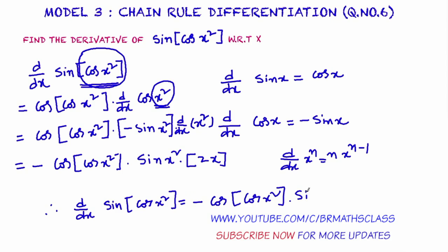Therefore, the derivative of sine of cos x squared is minus cos of cos x squared, into sine of x squared, into 2x. I hope you understand this class. If you like this video please press the like button, share it with your friends, subscribe to my channel — thanks for watching, bye bye.